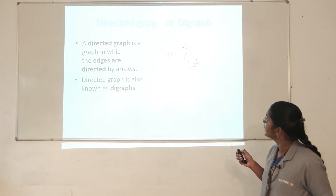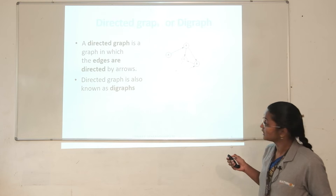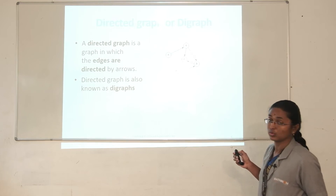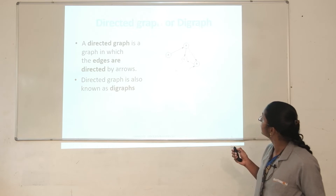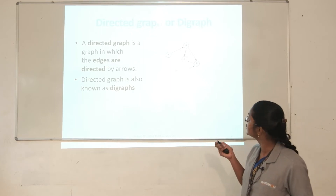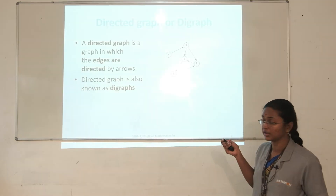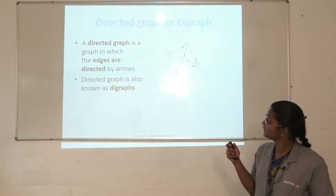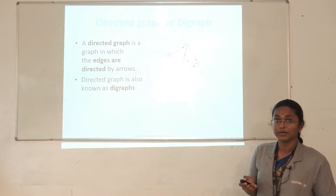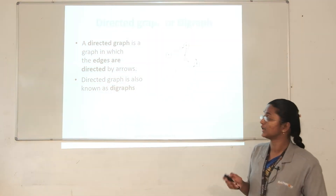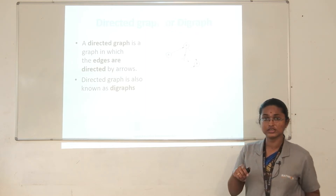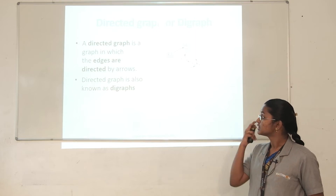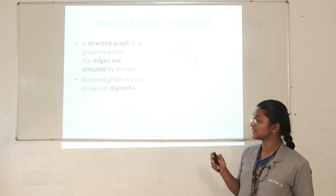In between A and B, the edge has an arrow which points to B. In directed graphs, the edge (A, B) is different from (B, A). That is, there is a flow from A to B but no flow from B to A. A directed graph is otherwise called a digraph.